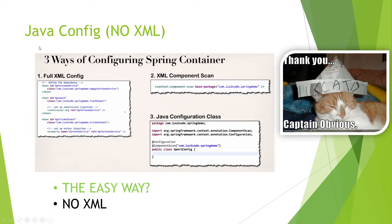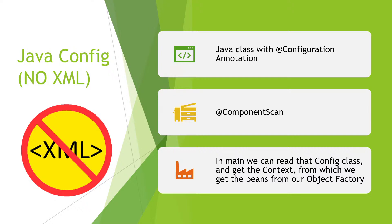We're on to our third way of configuring — configuring only with Java. What is the difference between this one and number two? Well, in number two we needed some XML to define some things. But now we're going to switch to only Java. What did we do in that XML? We only said to scan a certain package for every @Component. Now we're going to configure Java without XML. We're going to have a Java class with an @Configuration annotation — instead of applicationContext.xml, we'll have a class that only configures things for us. Inside that we'll annotate something with a component scan to scan a certain package.